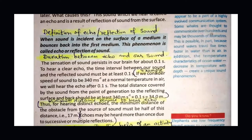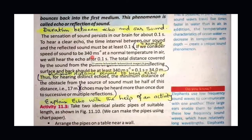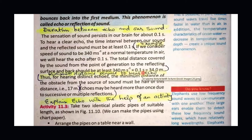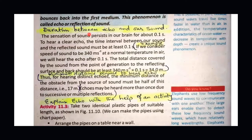For example, if the speed of sound at normal temperature and pressure is 340 meters per second, we can calculate the distance. Multiplying the speed of sound by 0.1 seconds gives us the total distance covered: 340 × 0.1 = 34 meters. This is the total distance — from the point of generation to the reflection point and back.